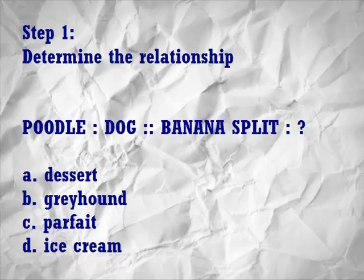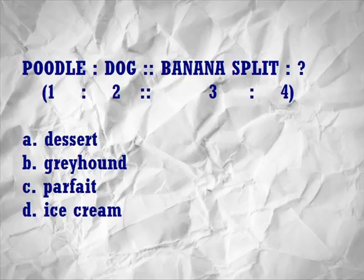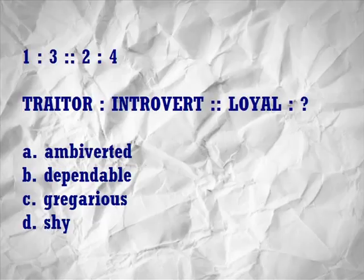Step 1: Determine the relationship. Poodle is to dog as banana split is to: A. Dessert, B. Greyhound, C. Parfait, D. Ice cream. That's a typical 1-2-3-4 analogy. The first two words — the stem words — easily connect. Here's a bridge: a poodle is a type of dog, or poodles constitute a subclass of dogs. It's often a good idea to predict a logical answer. Banana split is a type of what? Dessert. Choose A. Dessert — and that fits perfectly.